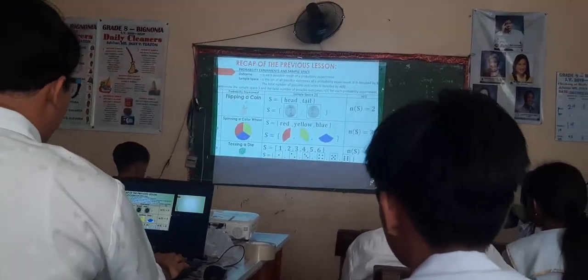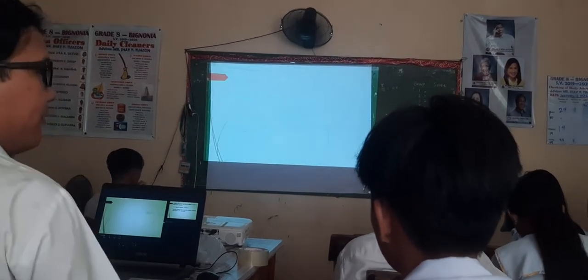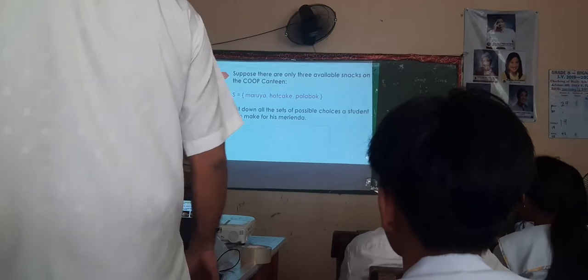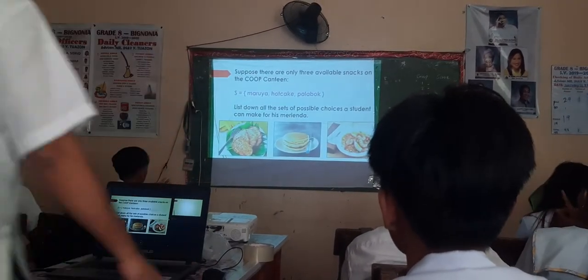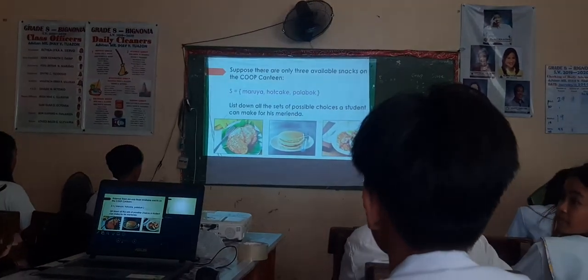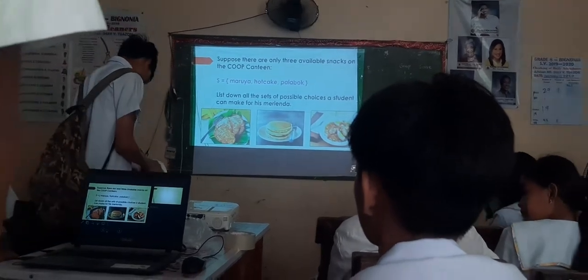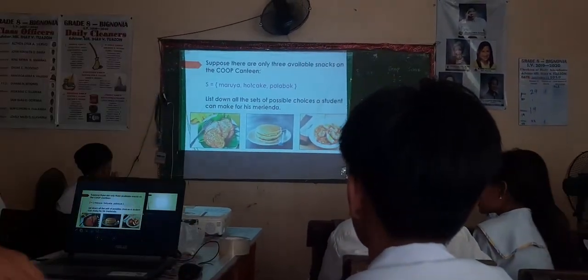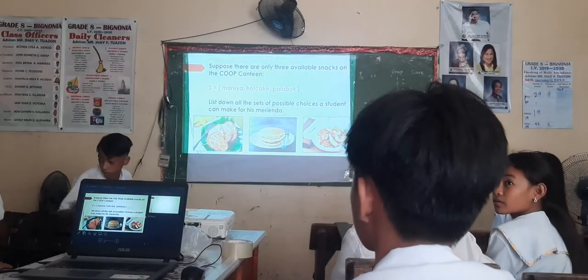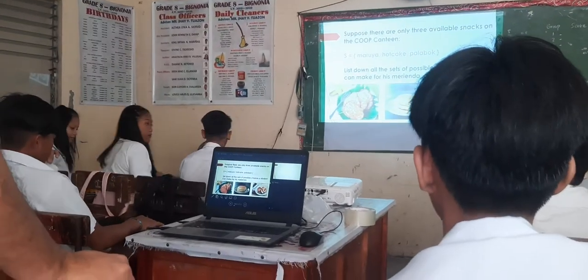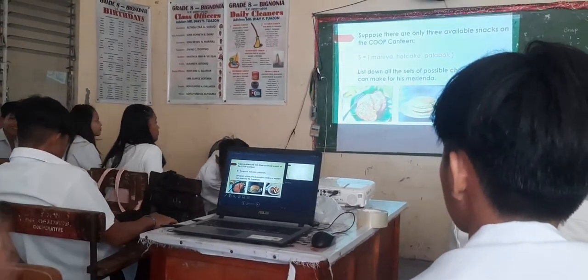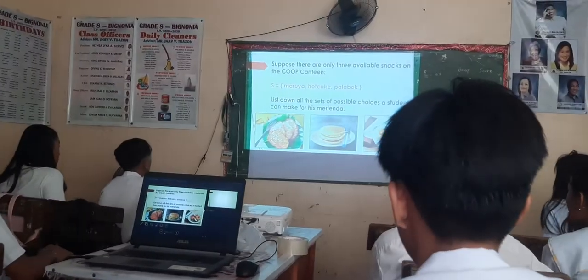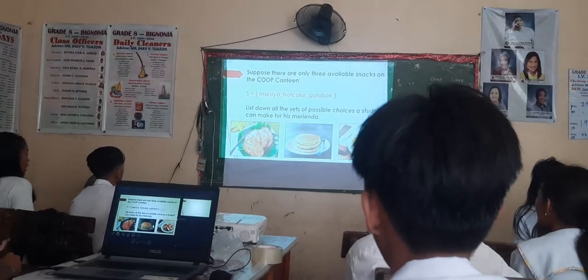We reviewed sample space and the total number of possible outcomes. Now let's have a new situation. Suppose there are only three available snacks in the school canteen — maruya, hotcake, or palabok. That is our sample space: S is the set containing maruya, hotcake, palabok. We will list down all the sets of possible choices a student can make for their merienda.